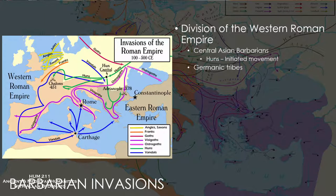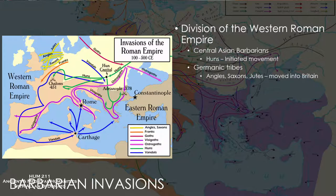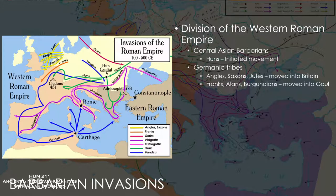Among the Germanic tribes worth mentioning, you've got groups like the Angles, Saxons, and Jutes — the tribes that ultimately moved into Britain around the middle of the 5th century, after Rome released that territory around 410. The Franks, which are the ones we'll focus on today, along with the Alans and Burgundians, moved into the region of Gaul in the 4th and 5th centuries.